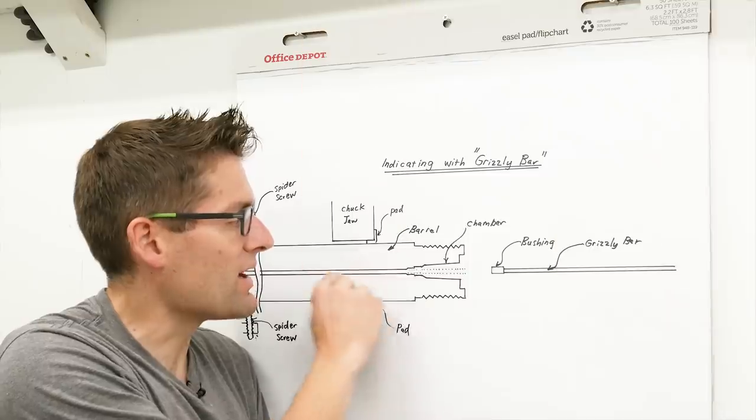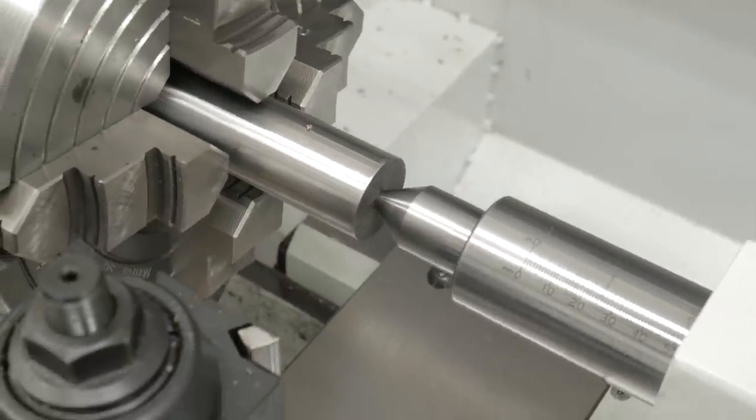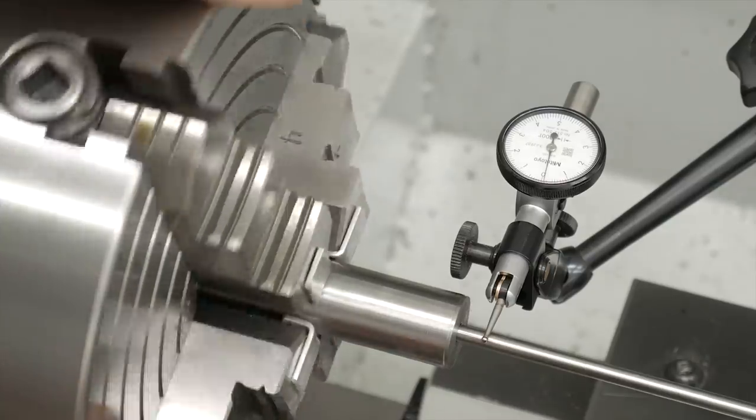In the last video we talked about getting the barrel blank prepared and getting it secured in the lathe, getting it completely aligned, a totally critical part of the process.